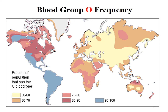Blood group O is the most common blood group all over the world. In South America, about 90 to 100% of the population have blood type O, and the lowest being in Central Asia, which is still about 50 to 60%.